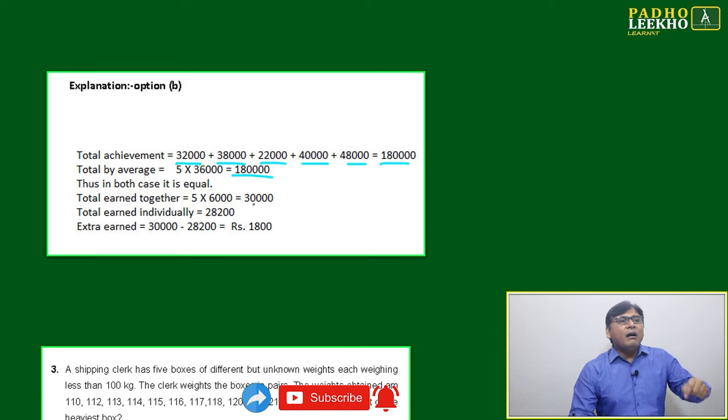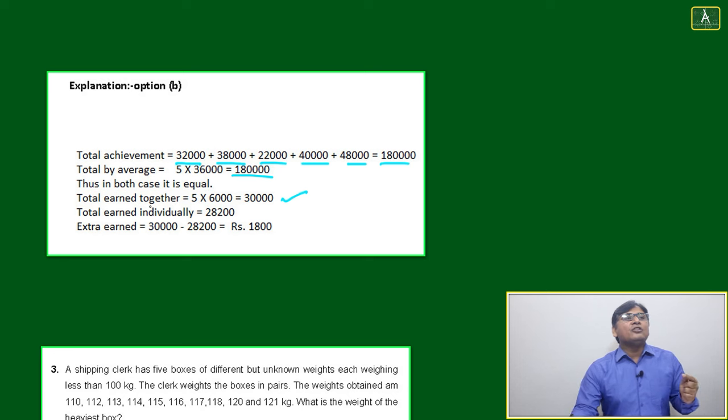Total earned together is 30,000. If 1 lakh 80,000 is there and you are taking based on the average 36,000, then individually they will get 36,000. Nobody will get extra or be deducted. Then what will happen? 6,000 × 5 = 30,000—the salary of these five collectively.